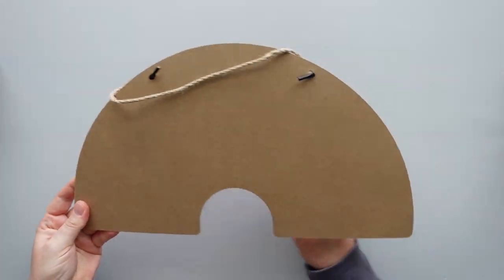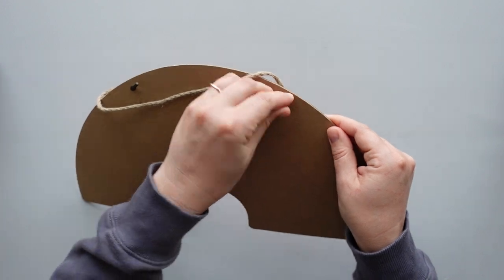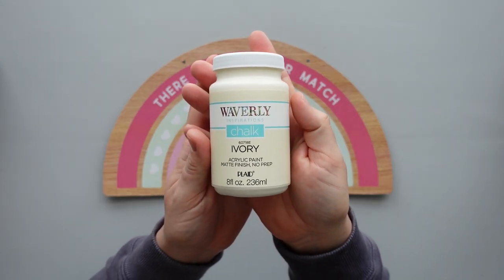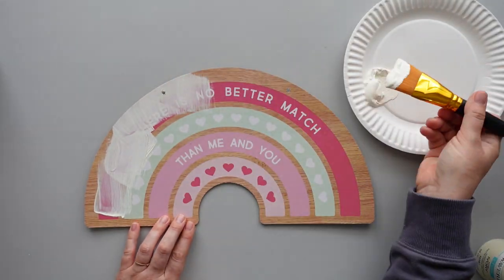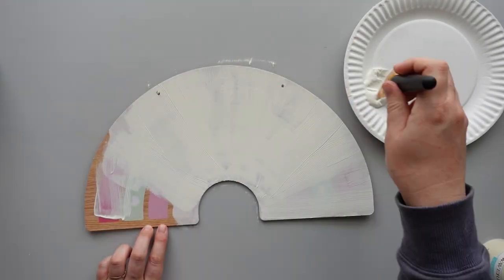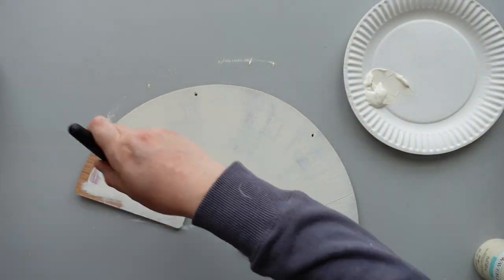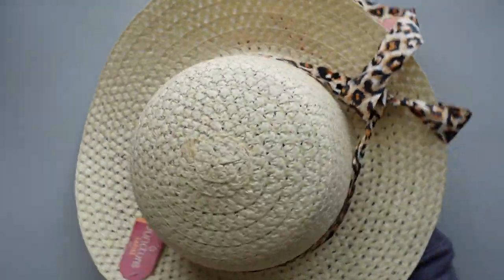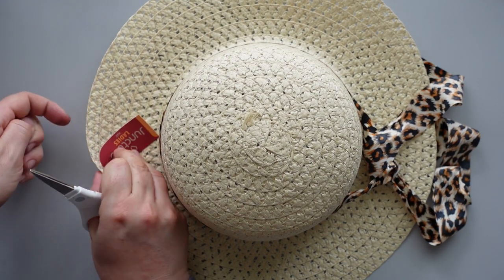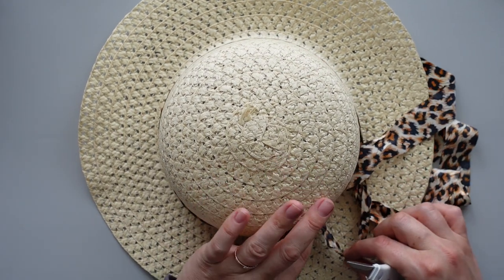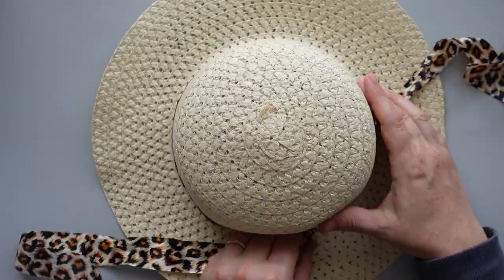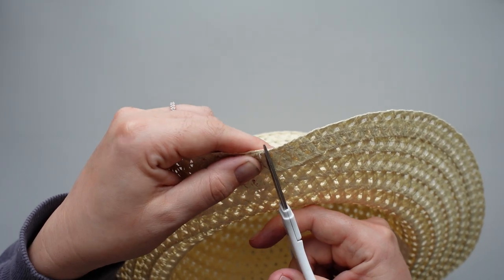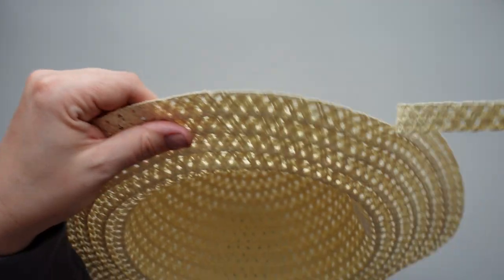For this first DIY, I started with a hanging rainbow that I picked up at Dollar Tree during the Valentine's season. After removing the twine hanger from the top, I gave the front of the rainbow a coat of ivory chalk paint. While waiting for the paint to dry, I grabbed an Easter hat from Dollar Tree and removed the tag and ribbon from around the hat. Then I deconstructed the hat, leaving me with a very long strip of the straw material.